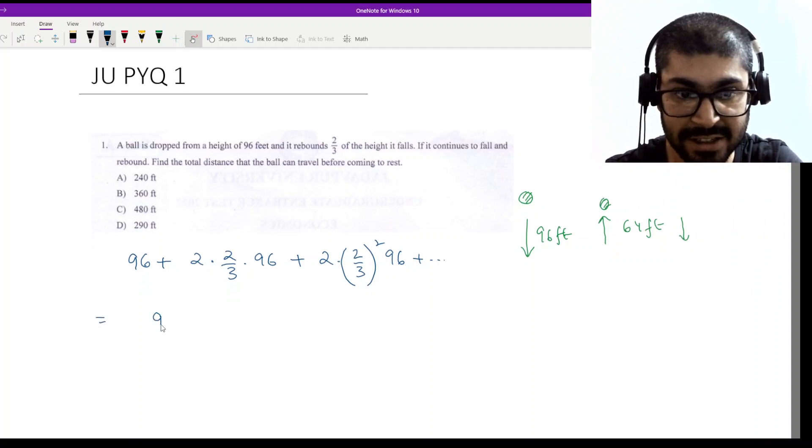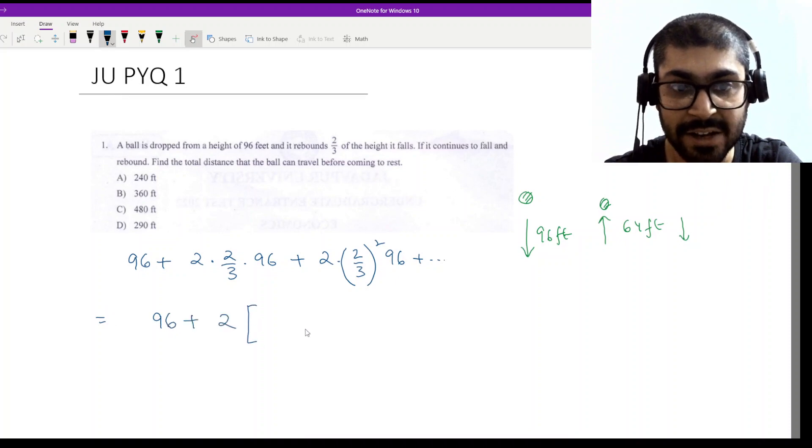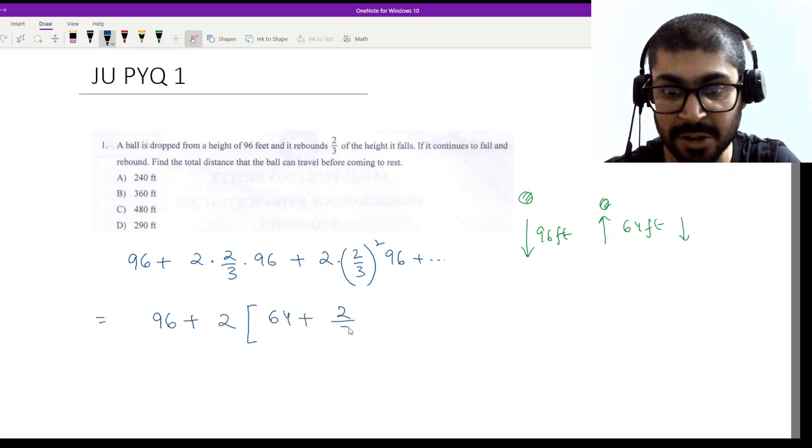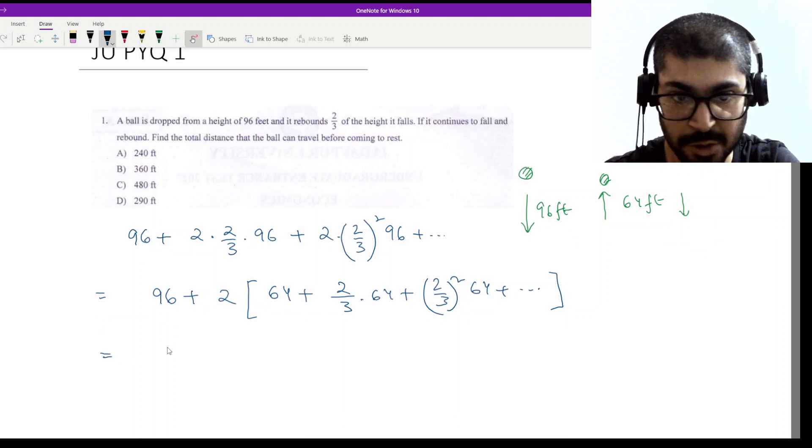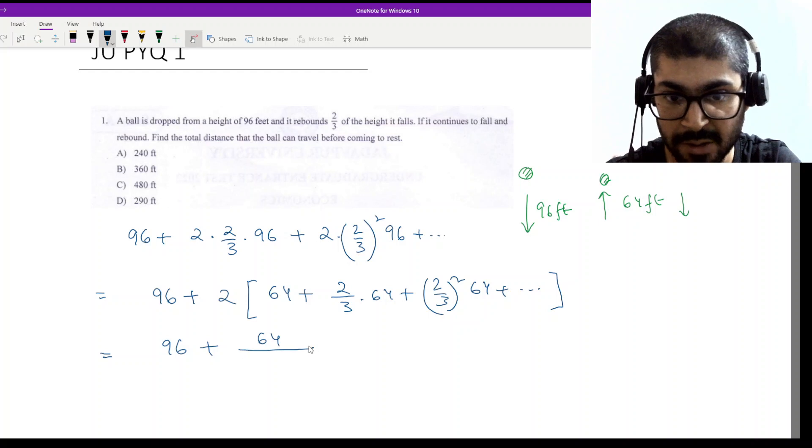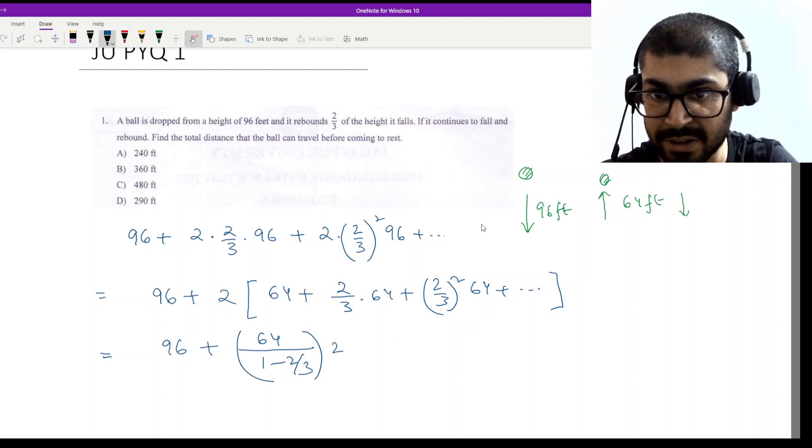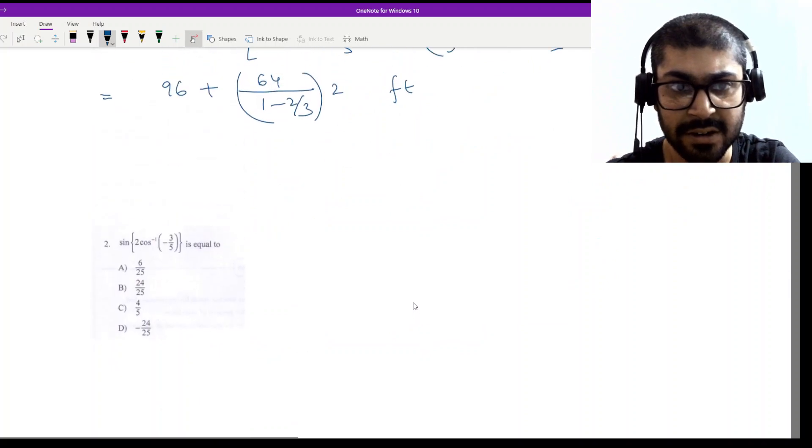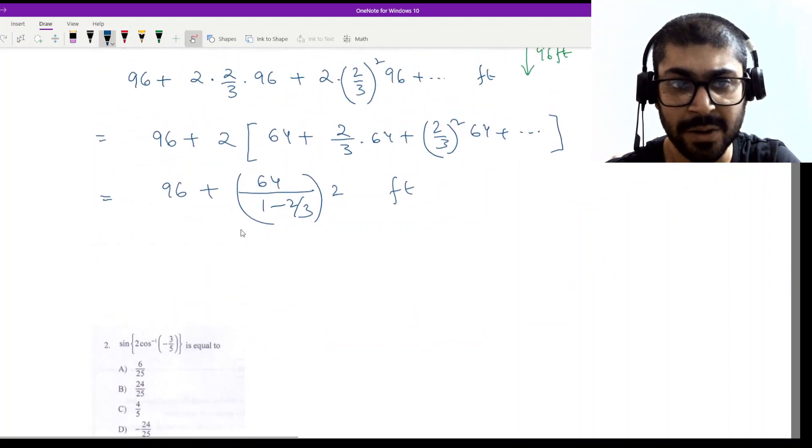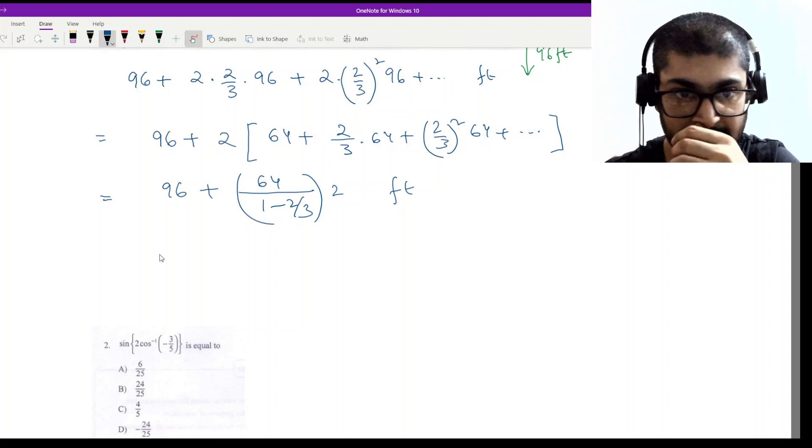Here you have 96 plus, if I take 2 common, then you will have 2 times (2/3 × 96). That is 64, and then I can say 2/3 × 64 plus (2/3)² × 64 and so on. Now this is an infinite GP, so we do a/(1-r). So 64/(1-2/3) times 2. So we can add it: 64/(1/3) times 2, which is 64 × 3 times 2.